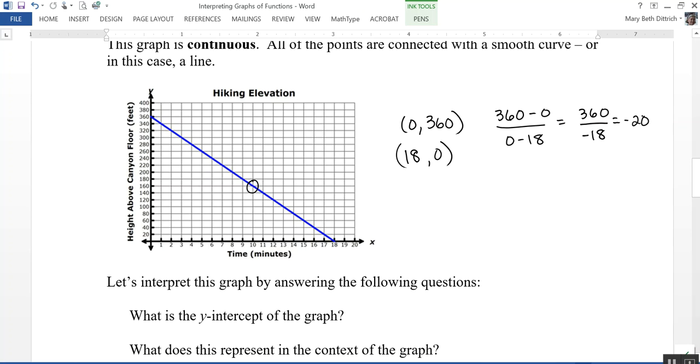So what does that mean? That means that from here, let's say from any two points, so from this point to this point, I'm dropping 20 feet on the canyon floor every minute. So every minute, the person is descending in altitude by 20 feet.